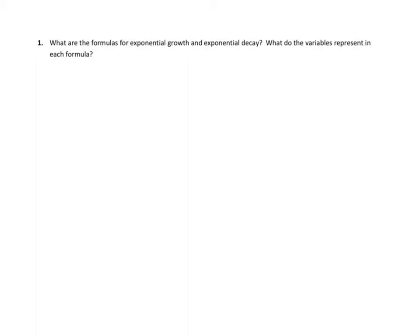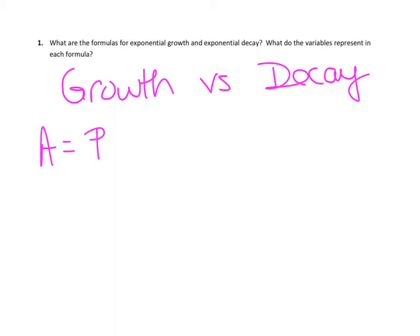So our first question is, what are the formulas for exponential growth and decay, and what do the variables represent in each formula? Let's review. Growth versus decay. We're going to start with our amount equals the amount present times 1 plus the rate to the time. And if it's decay, our amount equals the amount present times 1 minus the rate to the time. We know if this number is bigger than one it's growth, and if this number is smaller than one it's decay.